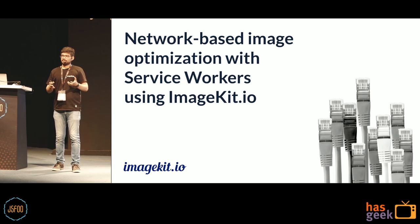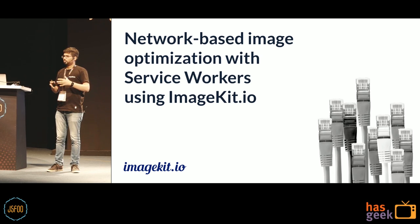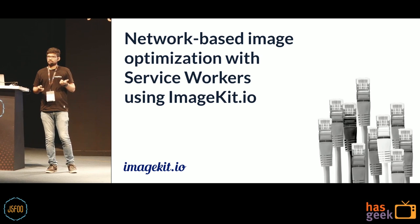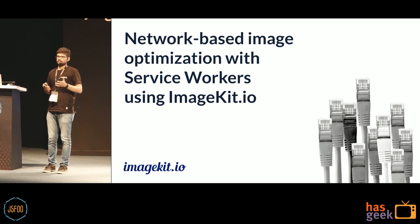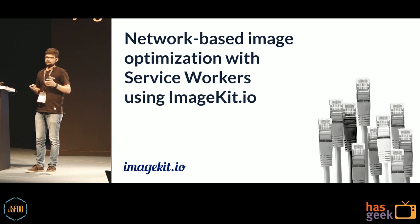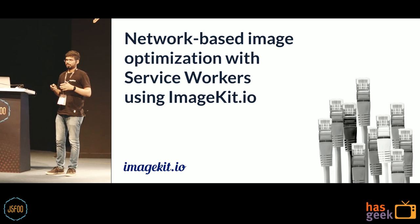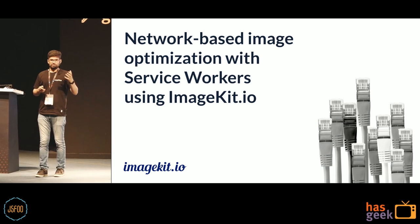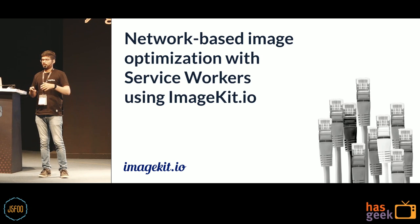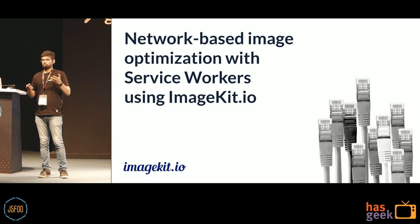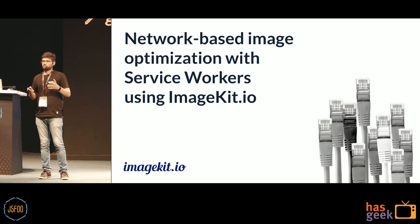What we basically do is real-time image optimization and transformation. Today I'm going to talk about something a lot of people have come up to us and asked: how do we optimize images based on the user's network? If the user is on 3G or 2G, how do we change the image we're sending to them? Consider a typical e-commerce website loading hundreds of images — they would want to do some optimization for users on a slower network.